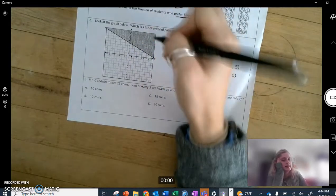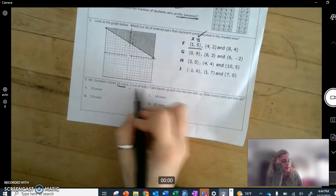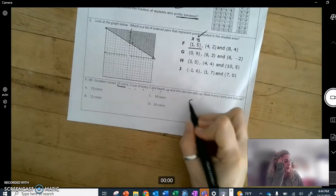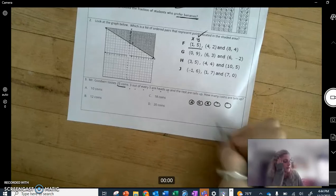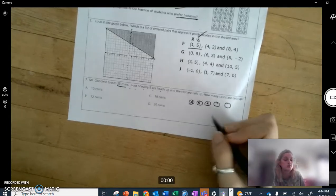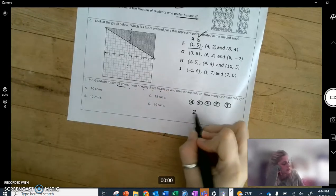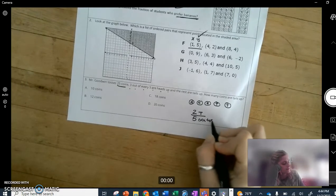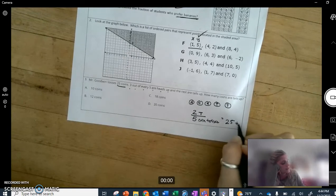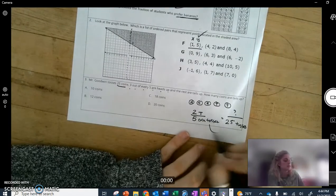Okay, Mr. Goodwin tosses 25 coins. Three out of every five are heads up. So if we have five coins, three of them are heads up. I'm going to put an H because I'm not very good at drawing heads. And then the other two, well your options are heads or tails, so the other two are tails. How many coins are tails up if you toss 25 coins? Well, two tails out of five coin tosses, set that equal to a total of 25 coin tosses. What's that number? So you're looking for a side-to-side relationship.